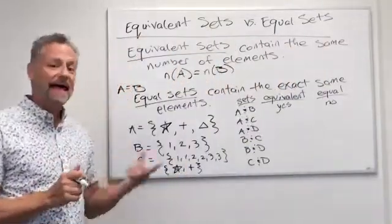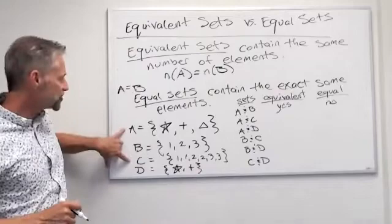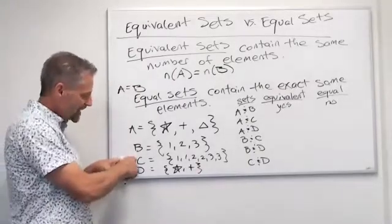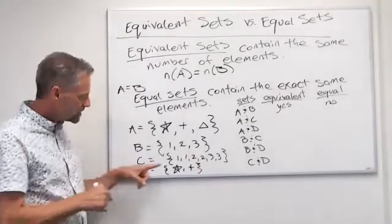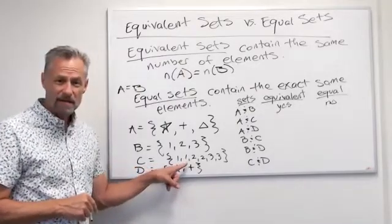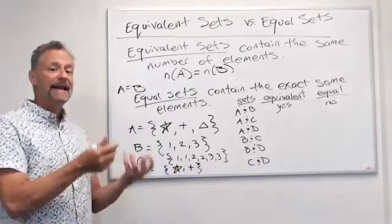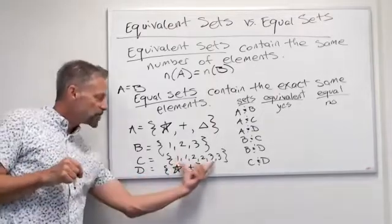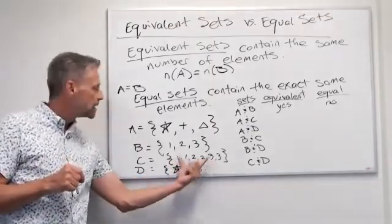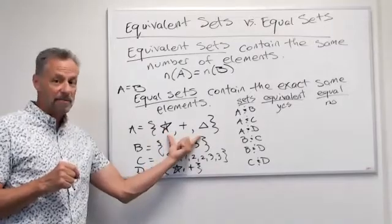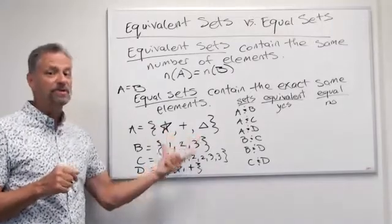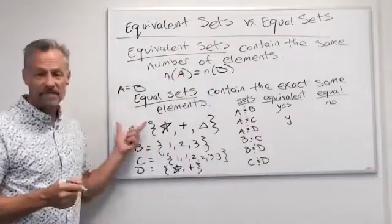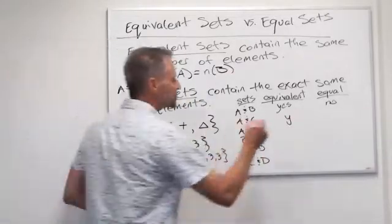Now let's go to A and C. Notice with sets, I don't double count the same thing. The cardinality of a set is the number of distinct elements in there. There are only three distinct elements in A, and only three distinct elements in C. So these are equivalent — yes again. But obviously they're not equal; they're not the same set. So we'll say no.